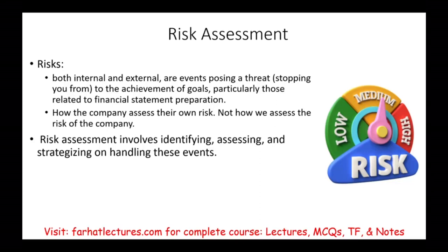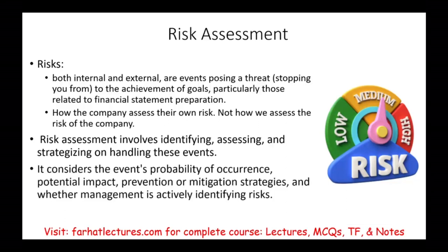Each company will have different types of risks depending on which company you are running and what industry you are in. For example, if you're in the food industry, the risk could be food poisoning or supply chain problems. For an airline company, a major risk could be safety. Companies must consider the probability of an event happening, its potential impact, and what steps to take to prevent or mitigate the risk.